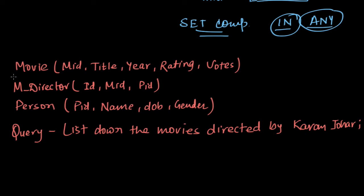For our example, we have three tables — movie, m_director, and person — in the database tech2_imdb. Movie and person are entities, and m_director is a relational table used to store the relationship between movies and directors. Now we need to find and list the movies directed by Karan Johar.